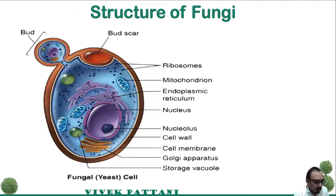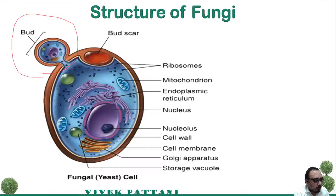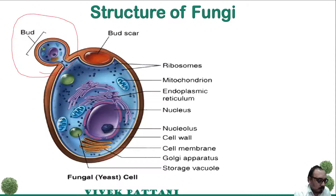The diagram given here is of a yeast cell, which is similar to a eukaryotic structure. Here, the formation of buds occurs because yeast generally reproduce by means of budding. It may produce one or more buds.